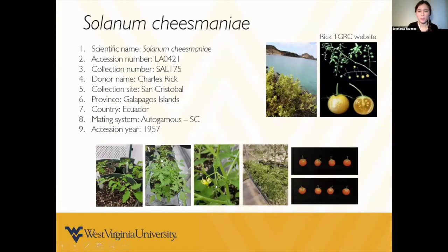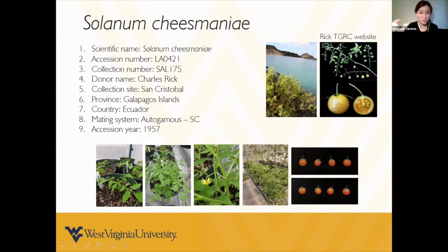I want to show the phenotypic and morphological characteristics of this plant, which is originally from the Galapagos Islands and grows close to the seashore. It is an autogamous and self-compatible plant, and the fruit it produces is a grape tomato — a yellowish tomato. This is a picture of my fruits in the greenhouse; they look orange-ish.